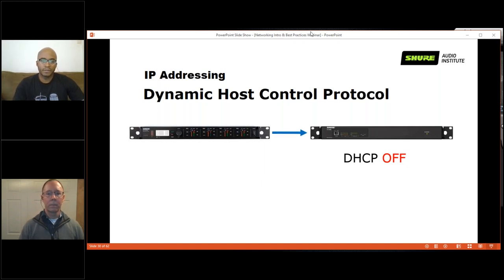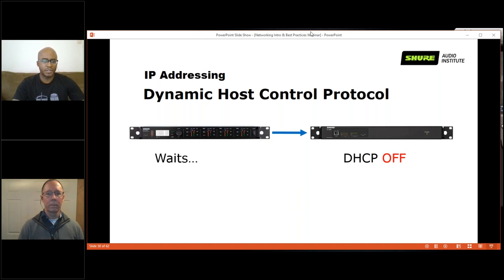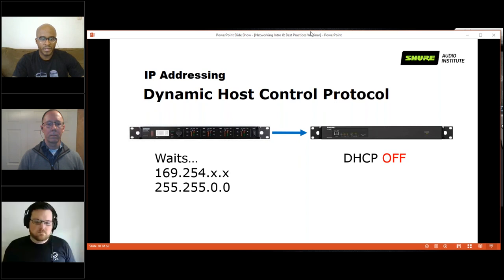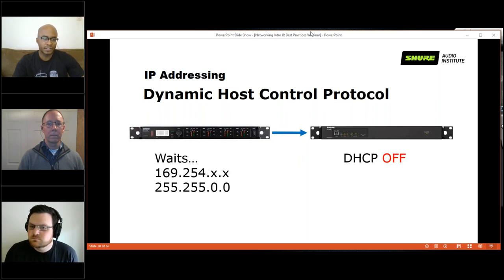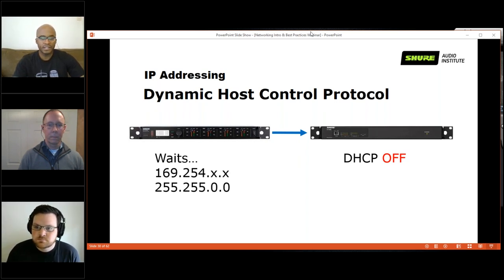If the DHCP server is off or there is no DHCP in your environment, the host will look around the network for any DHCP server. If none is found, it will wait for a timeout period and then fall back to a 169.254.x.x link-local address with subnet mask 255.255.0.0, where the first two octets are fixed at 169.254 and the last two can be anything between 0 and 255.